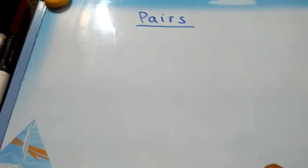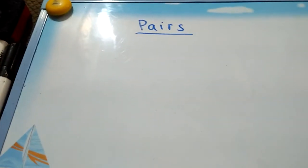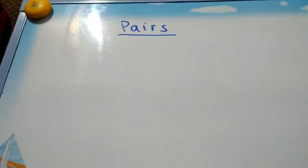In this video I'm going to tell you about pairs. Pairs only work with cyclic numbers except 142857.